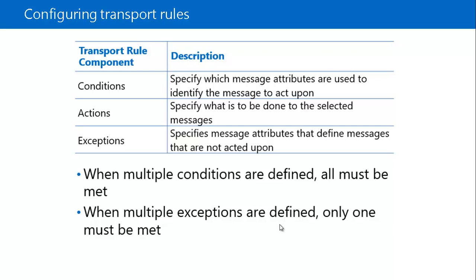There is no limit to the number of conditions you can apply to a single transport rule. If you configure multiple conditions on the same transport rule, all conditions must be met for the transport rule to apply to a particular email message. When you specify multiple values on a single condition, the condition is satisfied if at least one of the values is met.